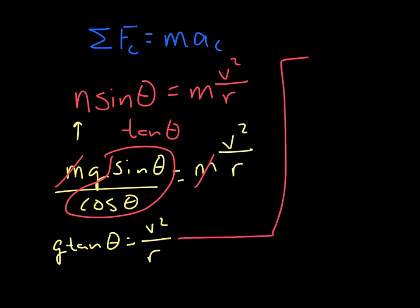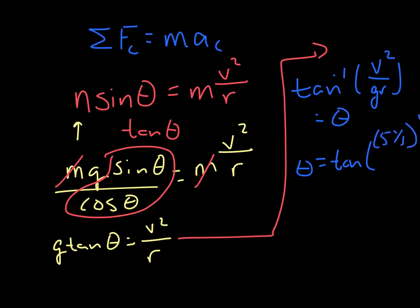So if we give ourselves a little more room here, you'll get tangent to the minus 1 v squared over gr equals theta. So theta is equal to inverse tangent. Our bobsled had a velocity of 5 meters per second, so 5 meters per second. The whole thing gets squared over 9.8 times the radius, which was 10 meters.